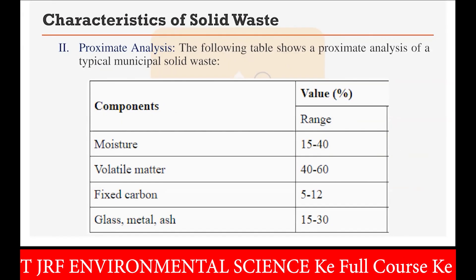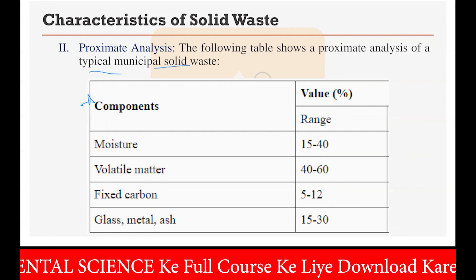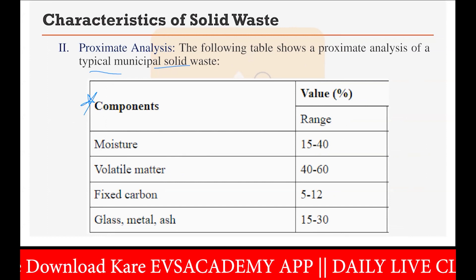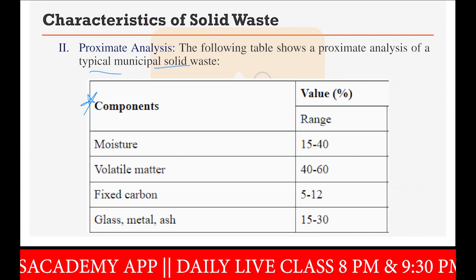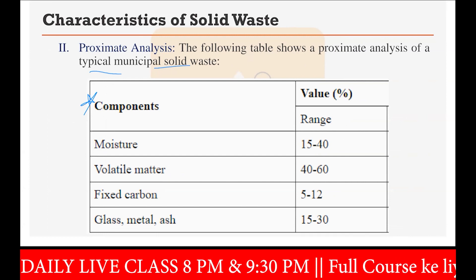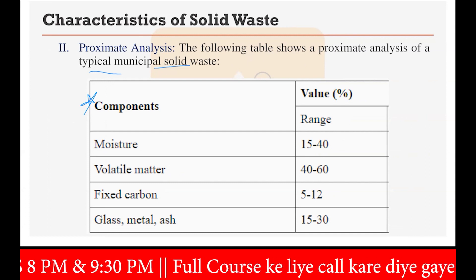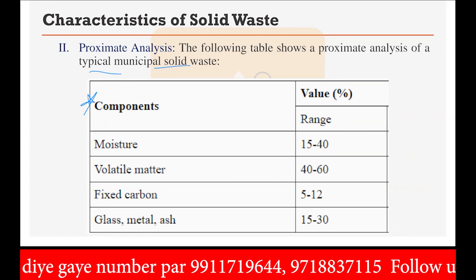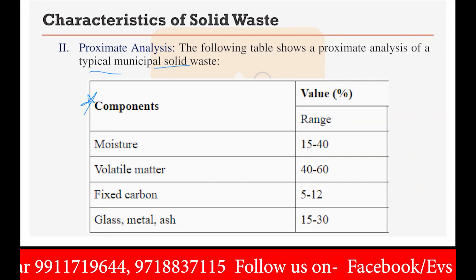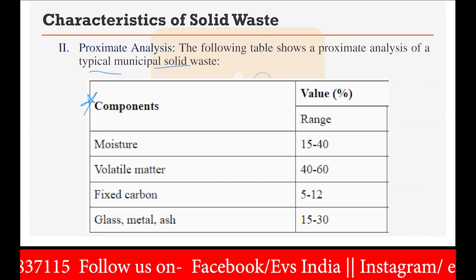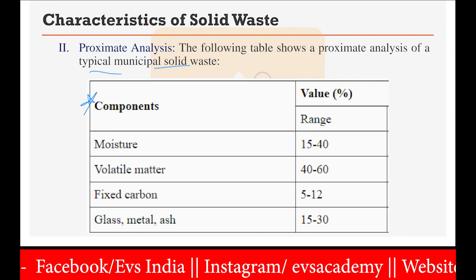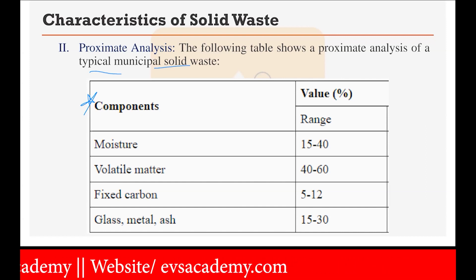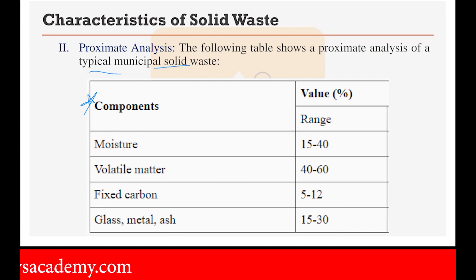The typical proximate analysis values for municipal solid waste are: moisture content in the range of 15 to 40% (more than 50% moisture is not recommended for combustion as it consumes a lot of energy), volatile matter in the range of 40 to 60%, fixed carbon content in the range of 5 to 12%, and other materials such as glass, metals, and ash content in the range of 15 to 30% only. This is the proximate analysis of municipal solid waste.